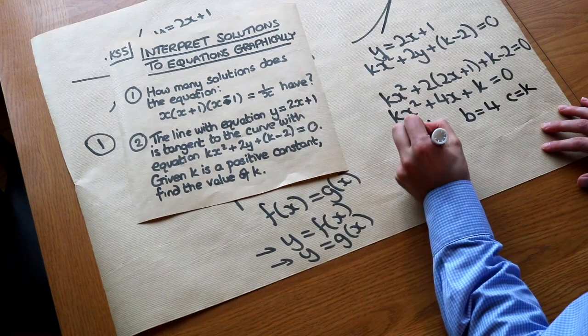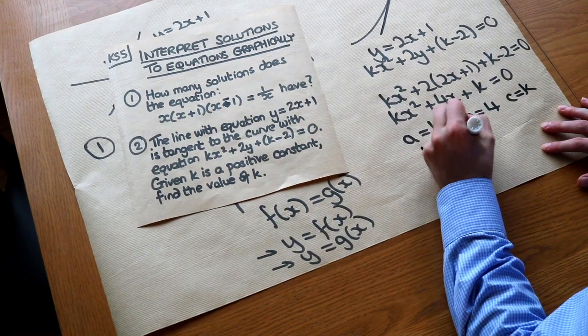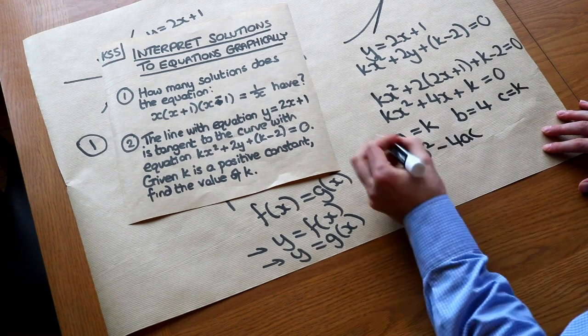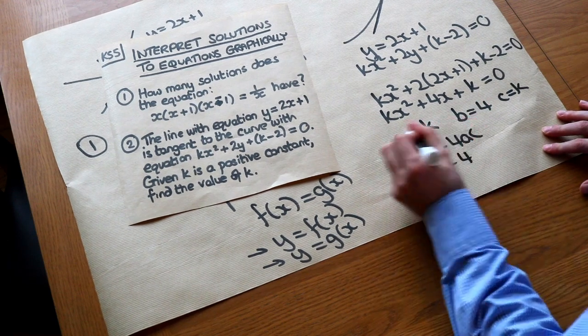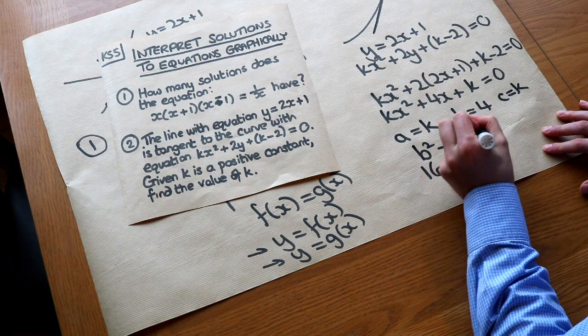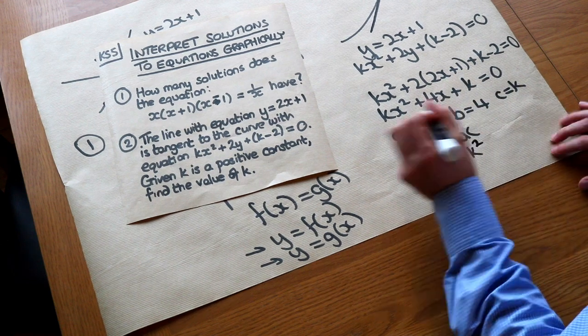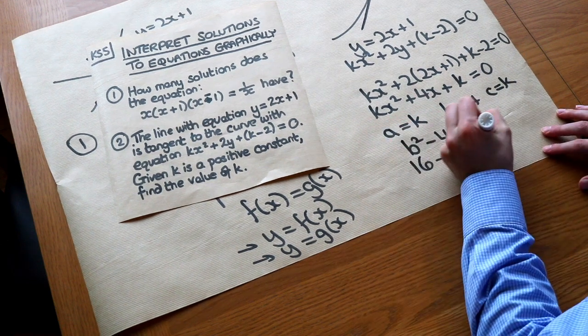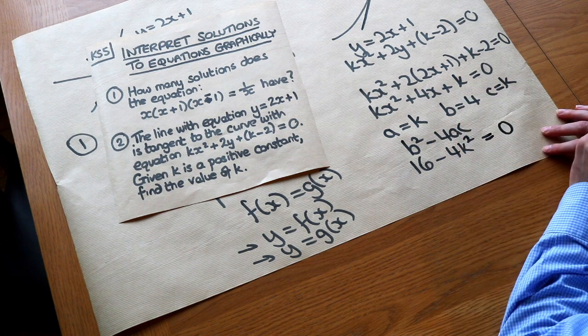And then we use the discriminant. The discriminant is b squared minus 4ac, which is 16 minus 4 times a, which is k, times the c, which is k also. And the discriminant is equal to 0 when we have equal roots.